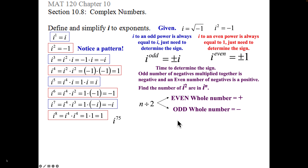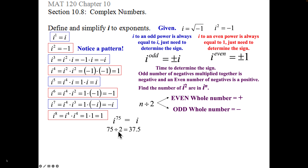Here are some examples. i to the 75th power: please don't count through the repeating cycle one by one all the way up to 75. First, 75 is odd — so the answer is i. Now determine the sign: 75 divided by 2 is 37.5, the whole number is 37, which is odd, so the answer is negative i.